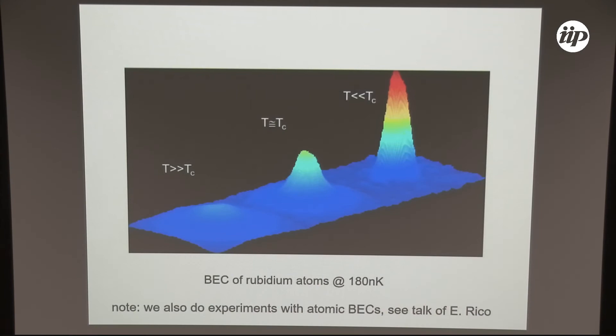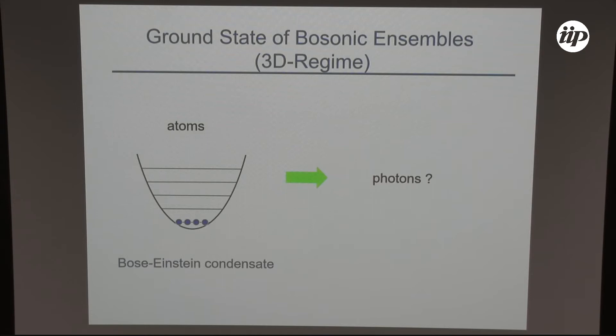For atomic Bose-Einstein condensates, or for atomic gases, the ground state — or more precisely the state of minimum free energy — is the Bose-Einstein condensate. Now, what happens if you try to do the same experiment, just cooling down in three dimensions for photons? The photons just go away; it gets black. Photons normally have no chemical potential; they're not conserved particles. Blackbody radiation at zero kelvin gives you the absence of photons, so that's not a very interesting state of the light field.